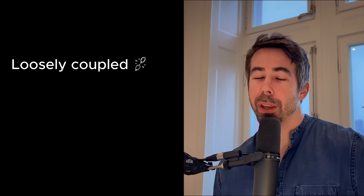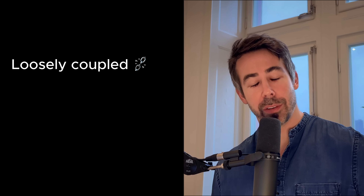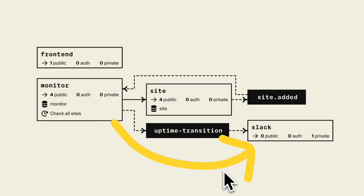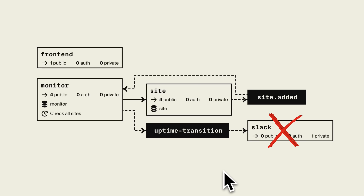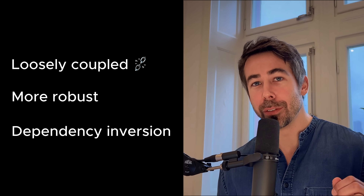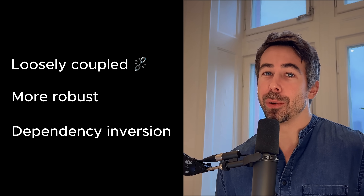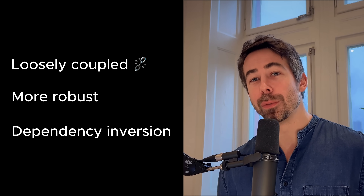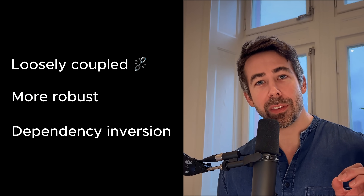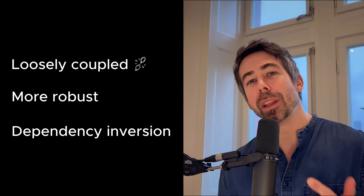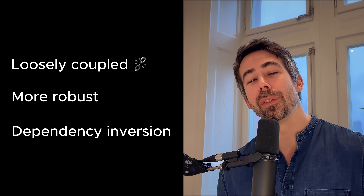By making these changes we make our services more loosely coupled, which almost always is a good idea. Now the monitor service doesn't even need to know that the Slack service exists, and the site service can remain independent from the monitor service. The Slack service can be offline without affecting the monitor service, and when it gets back online it can just read from the event queue and pick up where it left off. Both the monitor and the Slack service are now dependent on an abstraction rather than on each other — this is called dependency inversion — and this allows us to add or replace other notification channels like Discord or email without having to touch the monitor service at all.